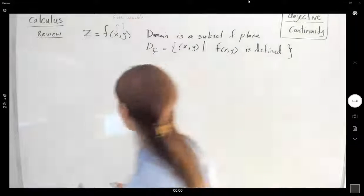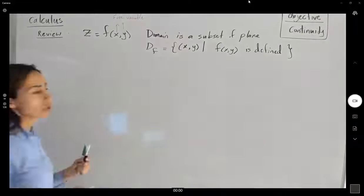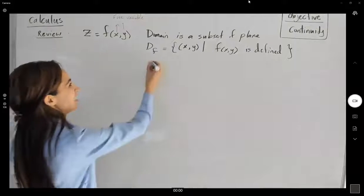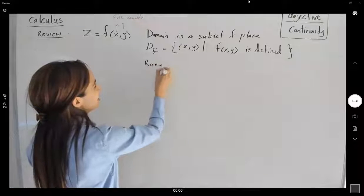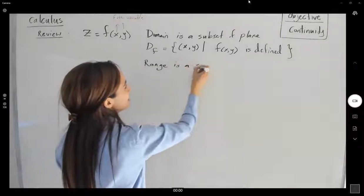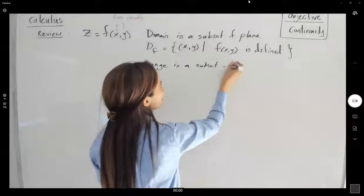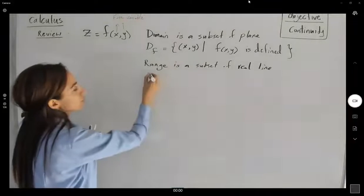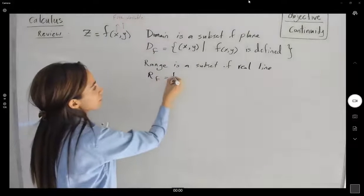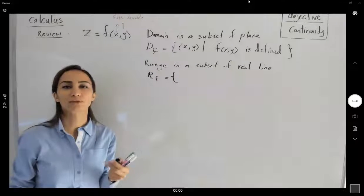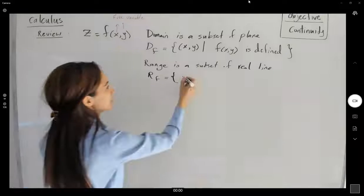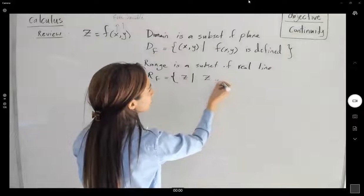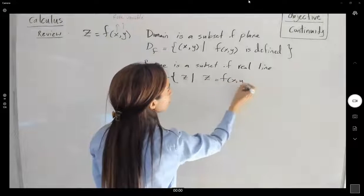We talked about the range of the function. The range is a subset of the real line. To define the range of f, you have the set of all z values — just single numbers — such that z equals f of x and y.